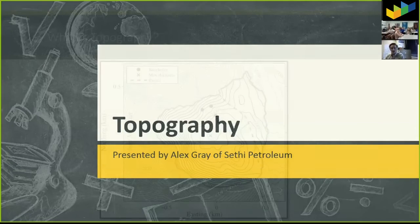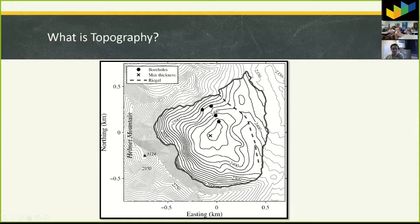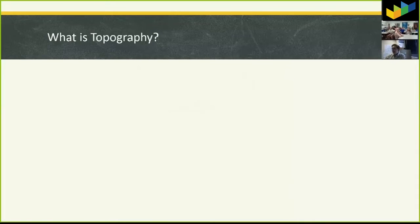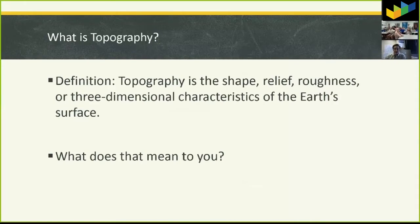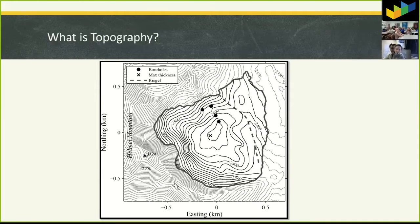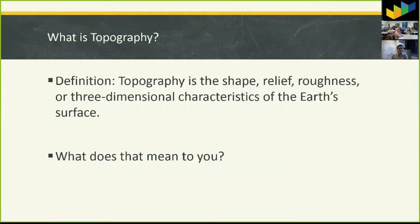Has anybody seen a topography map before or does anybody know what topography is? So you guys kind of recognize what you're looking at here? Good. So let's talk about what topography actually is. The definition of topography is the shape, relief, or roughness — any three-dimensional characteristics of the earth shown on a two-dimensional surface.